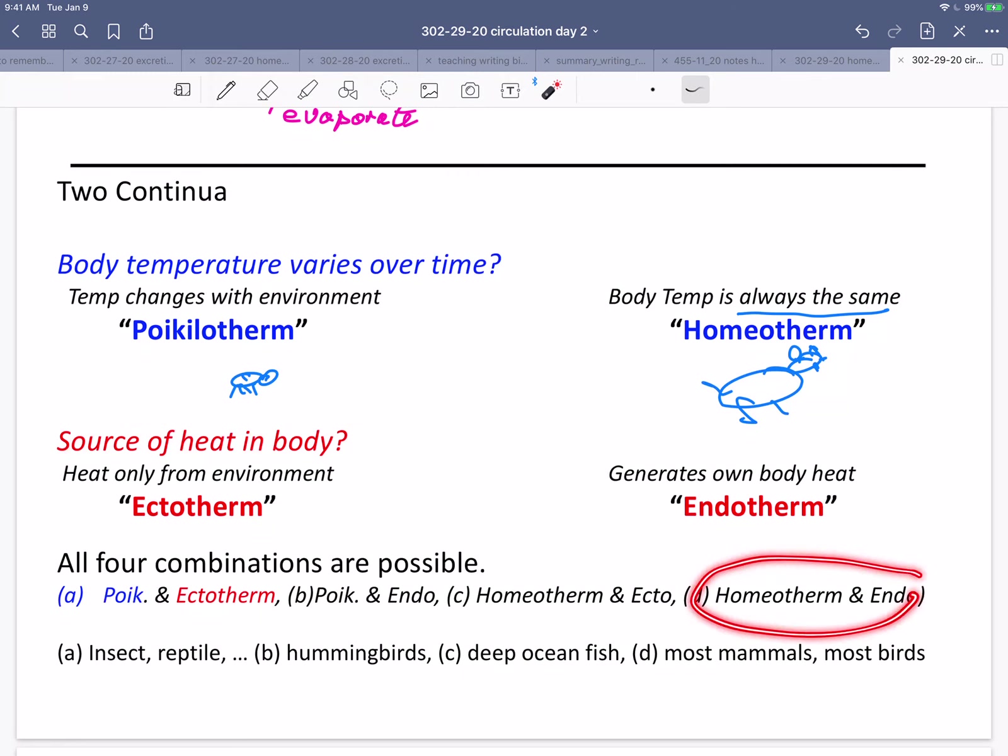And then homeotherms and endotherms, body temperature always the same, generate their own body heat. That's most mammals and most birds. We generate our own body heat, and most mammals and birds maintain a constant body temperature.